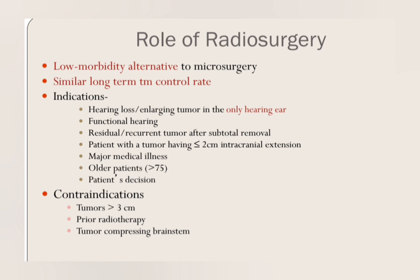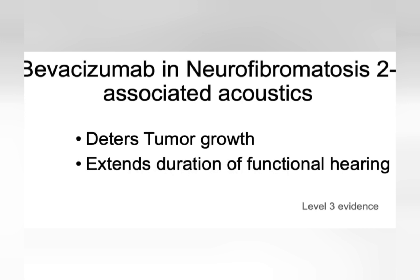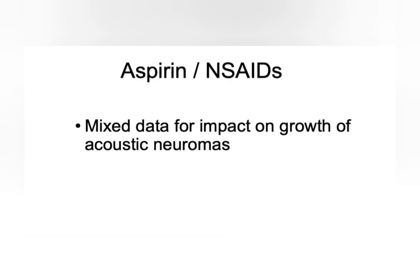Radiosurgery can be considered if this is the only hearing ear. It has some complications associated with radiation, though not as many as conventional radiotherapy. If the tumour is associated with neurofibromatosis, bevacizumab is a useful chemotherapy to deter tumour growth and also preserves functional hearing to some extent. However, chemotherapy is only used when associated with neurofibromatosis type 2; otherwise, it is not very effective.